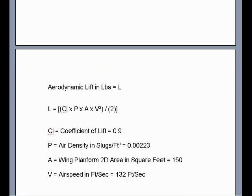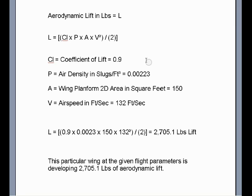Now we got all the data to make this aerodynamic lift computation. So all we do is just use this formula again. We got all the data. Multiply it out. So we got 0.9 coefficient of lift times 0.0023 slugs per cubic feet air density times 150 square feet of wing 2D platform area times 132 feet per second air speed quantity squared. These four multiplied out divided by 2 translates to 2705.1 pounds of lift. This particular wing at the given flight parameters is developing 2705.1 pounds of aerodynamic lift.